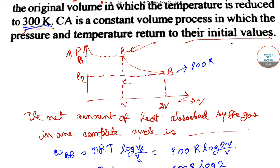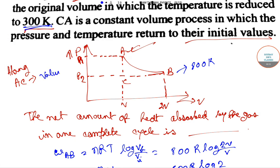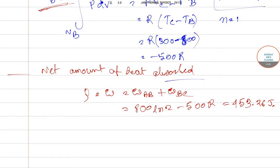Along CA the volume is constant, so W_CA = 0. For the complete cycle ABCA, the total work done is W_AB + W_BC + W_CA. Since W_CA = 0, the net heat absorbed by the gas in one complete cycle equals 453.26 joules.